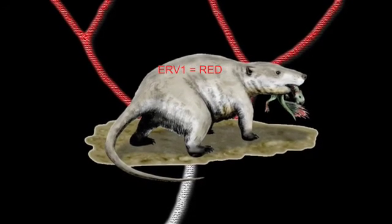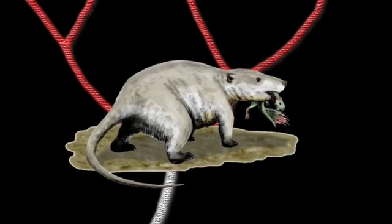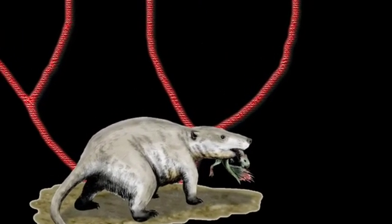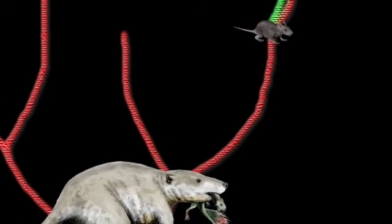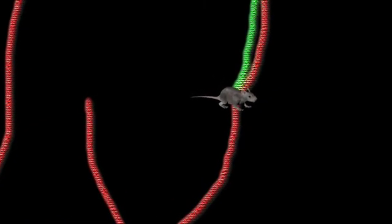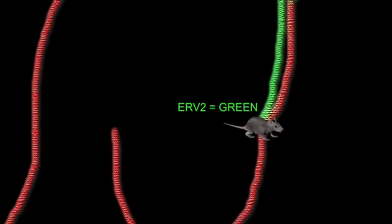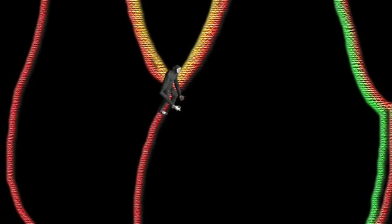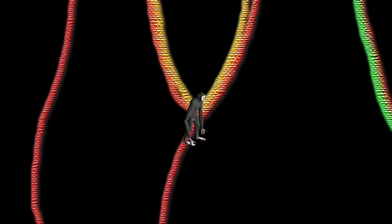Fast forward 30 million years. Different lineages have evolved and derived from the original common ancestor, and there are now many different types of mammals in existence, all carrying ERV-1. A small rodent, let's call it Secundus mausus, is the common ancestor of mice and rats, and is infected by a new species-specific retrovirus that becomes endogenous — ERV-2. In a different line, Secundus apis, the common ancestor of all great apes, acquires a third retrovirus, ERV-3.